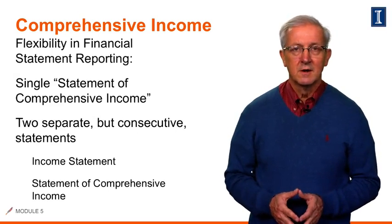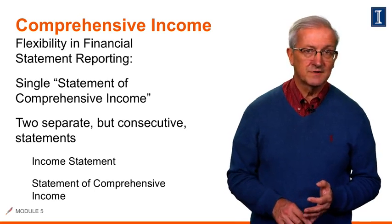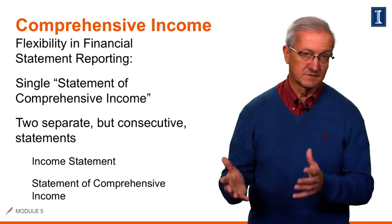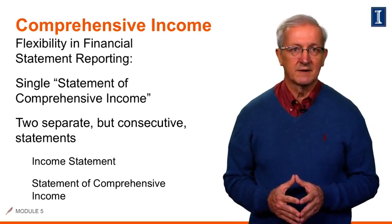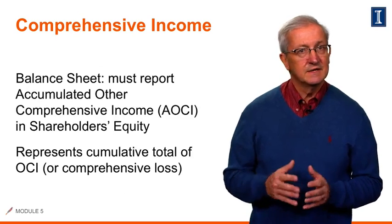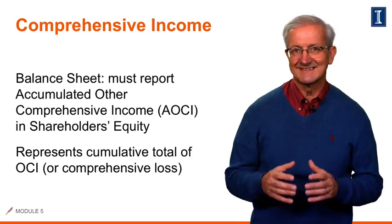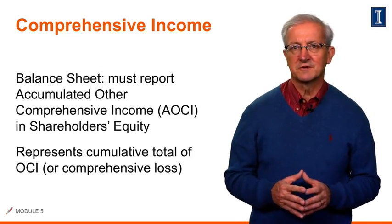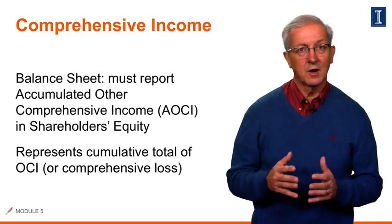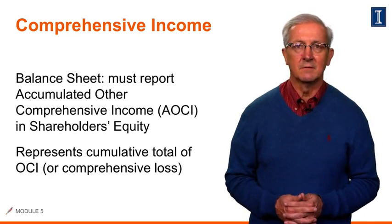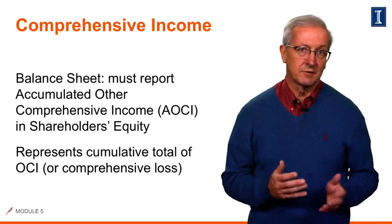As discussed before, comprehensive income can be reported one of two ways: in two separate but continuous statements, such as Apple Inc. does it, or in a single combined statement of comprehensive income. It should also be noted that the cumulative impact of all OCI items are reported as a separate component of shareholders' equity in the balance sheet, which is called AOCI, or accumulated other comprehensive income. We saw this category when we showed the Apple statement of shareholders' equity in an earlier session.